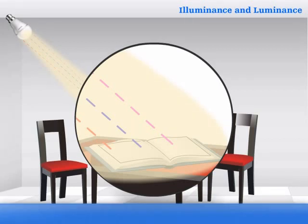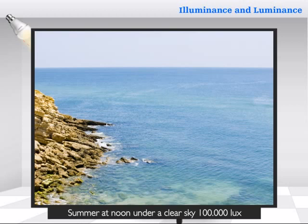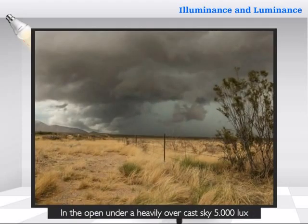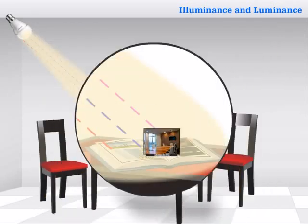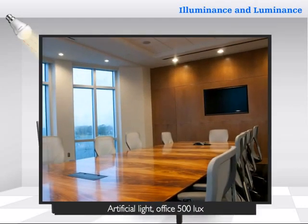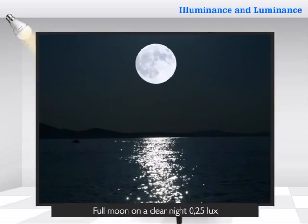Here are a few examples which can help us understand the Illuminance values: summer at noon under a clear sky, in the open under a heavily overcast sky, artificial light in an office, and full moon on a clear night.